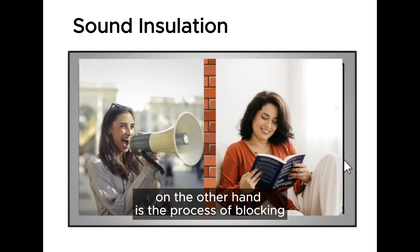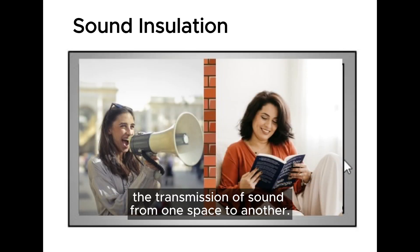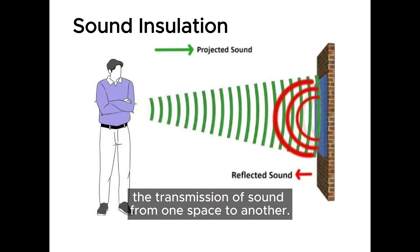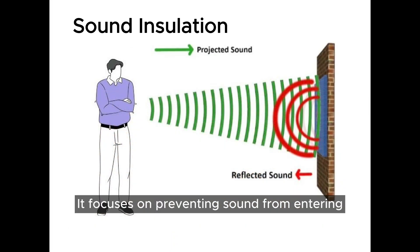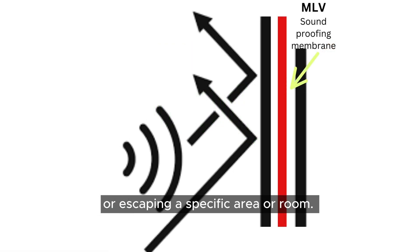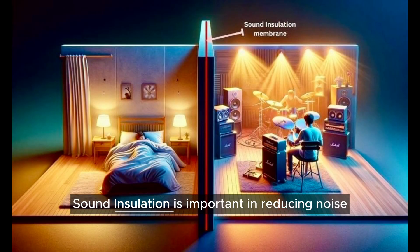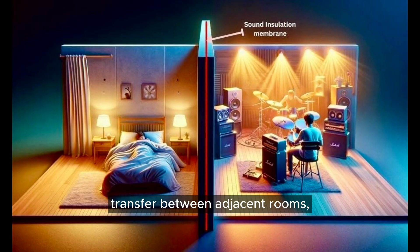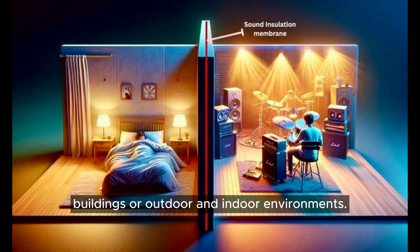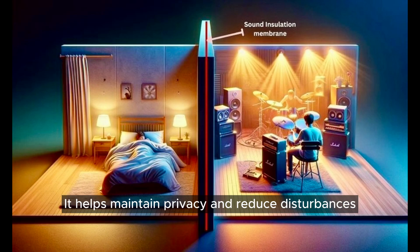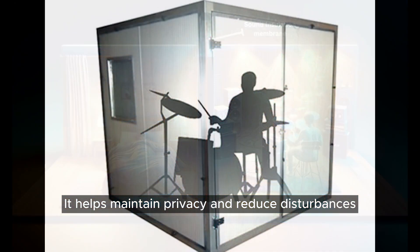Sound insulation, on the other hand, is the process of blocking or reducing the transmission of sound from one space to another. It focuses on preventing sound from entering or escaping a specific area or room. Sound insulation is important in reducing noise transfer between adjacent rooms, buildings, or outdoor and indoor environments. It helps maintain privacy and reduce disturbances.